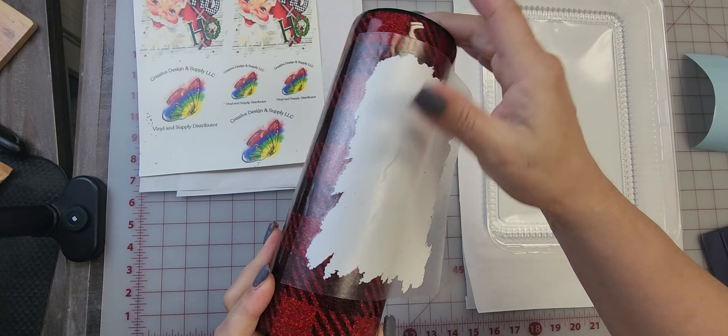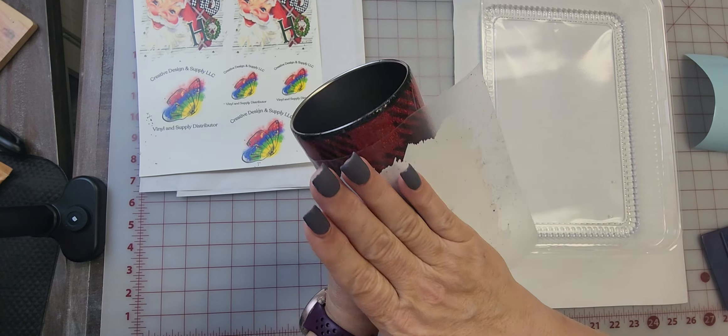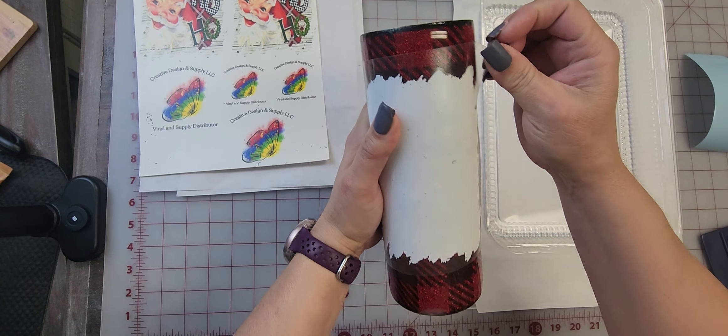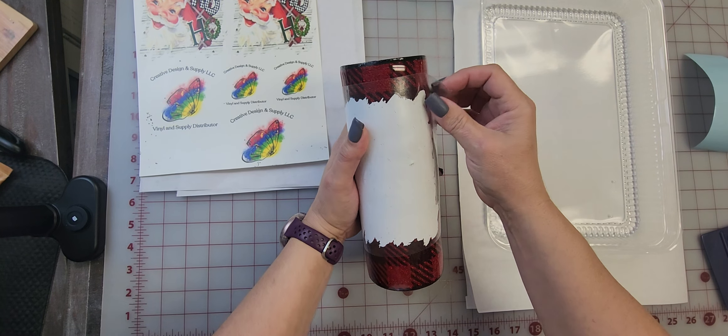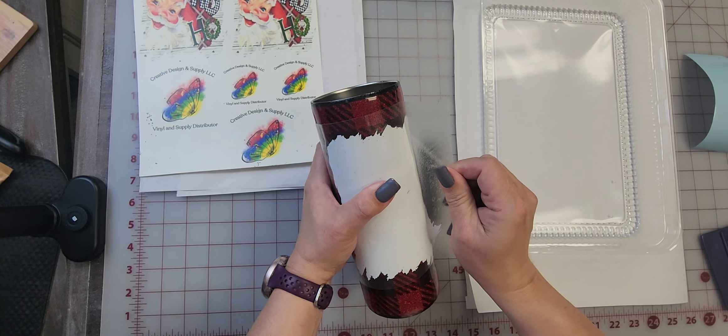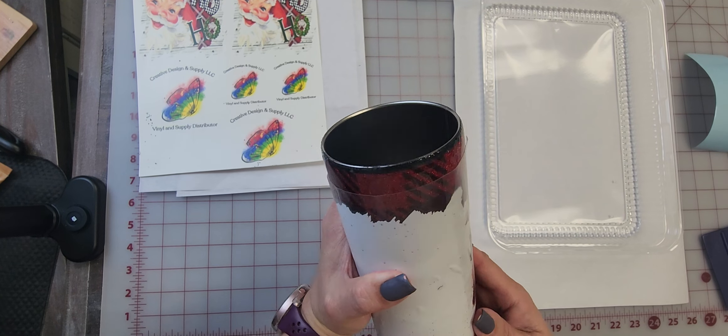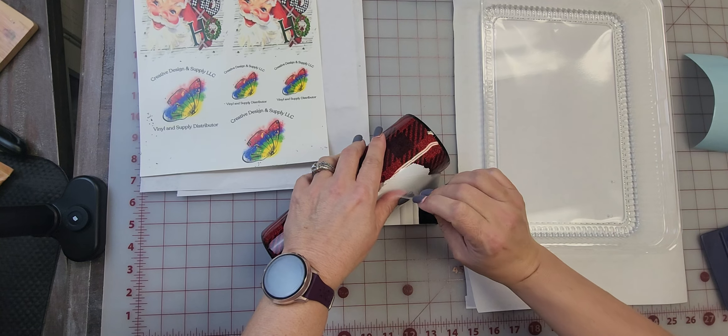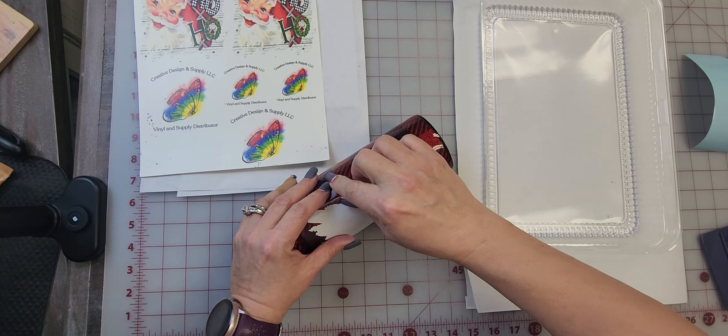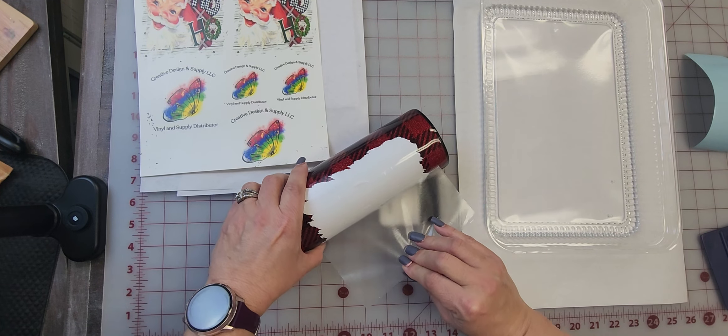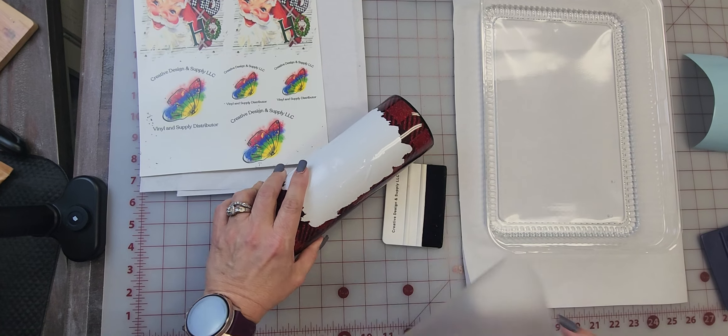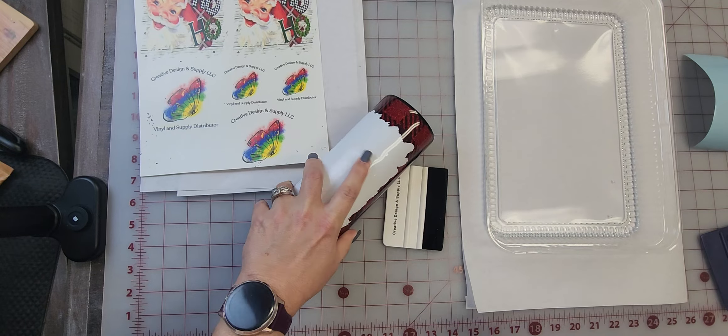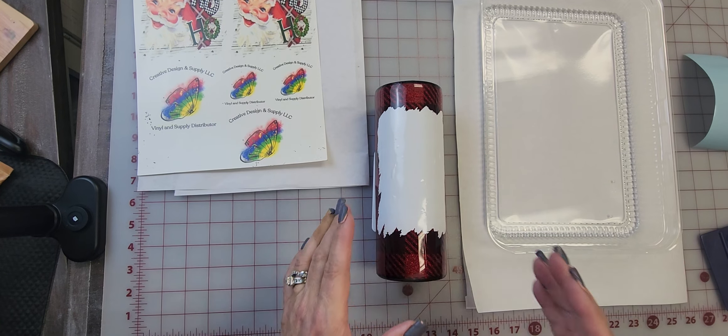You want to work in the middle and work out. If you get a bubble in it, it's okay. I'm going to show you how we're going to fix that in just a minute. I'm trying to keep it in frame. I could have wet applied this, but let me show you.